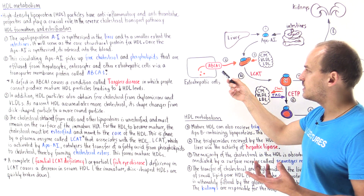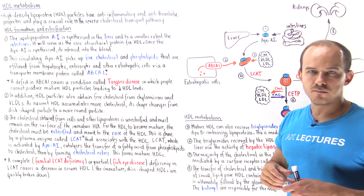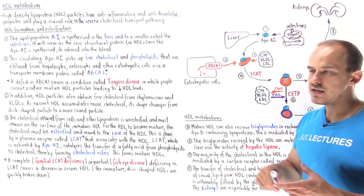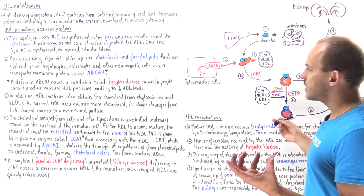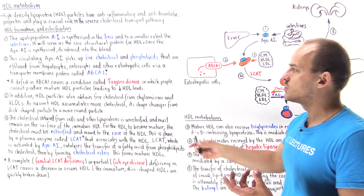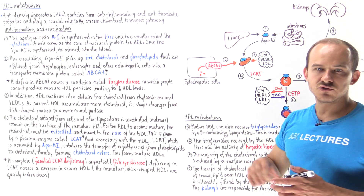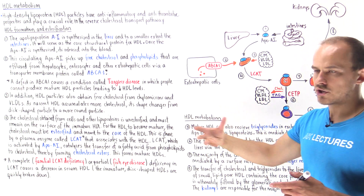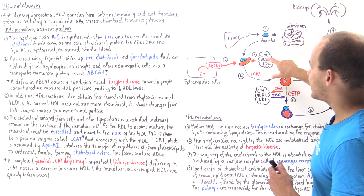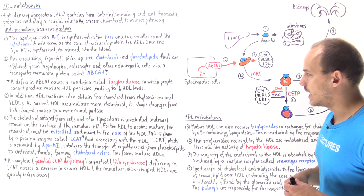In Tangier's disease, there is a loss of function, so we can't shuttle free cholesterol particles into the circulating apolipoprotein A1. As a result, we can't build a lot of HDL molecules. In patients with Tangier's disease, we're going to have high levels of cholesterol inside the cells — essentially trapped — and a relatively low number of HDL particles in the blood.